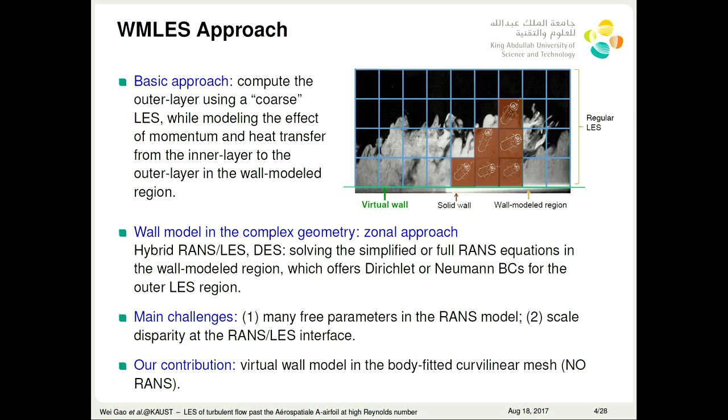The basic approach for the wall model LES is to compute the outer layer using a coarse LES while modeling the effect of momentum and heat transfer from the inner layer to the outer layer in the wall model region. There are many wall models for simple geometry developed, for example, for turbulent boundary layer flows, channel flows, pipe flows. Most of these models just assume the velocity profile is log-law and sometimes the information from the outer layer is not coupled into the wall region. So when this model is applied to the complex geometry, there will be some problems.